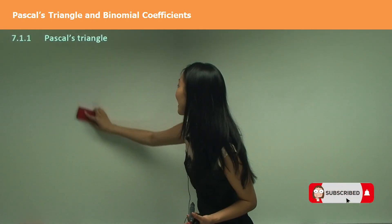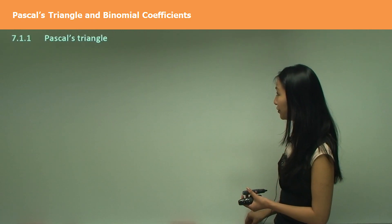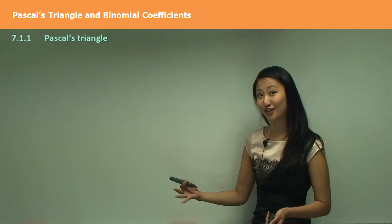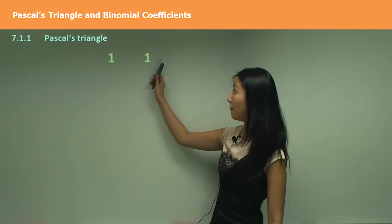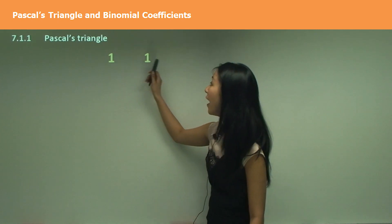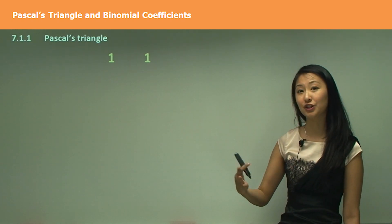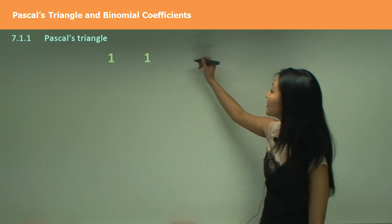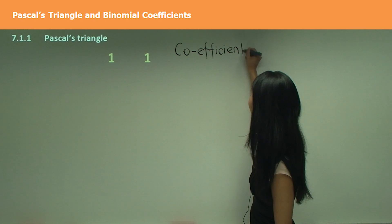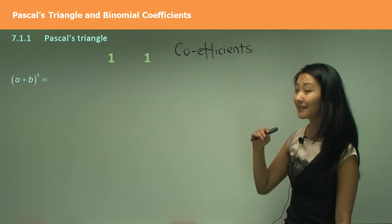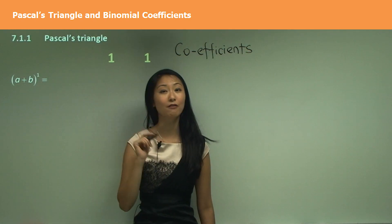So why are we learning about Pascal's Triangle? Well, Pascal's Triangle can actually be used for expansion, and I'm going to show you how. Let's consider the first set of numbers in Pascal's Triangle — that's one and one. These numbers are actually used as coefficients for expansion. So just remember, these are going to be coefficients. Let's have a look at the expansion of a plus b to the power of 1.